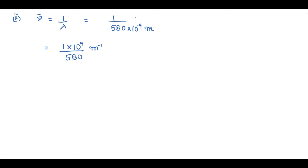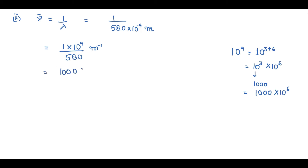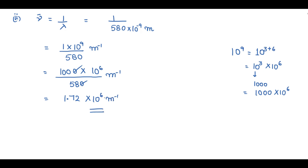Again the numerator value is less than 580, so we rewrite 10⁹ as 10³ × 10⁶, meaning 1000 × 10⁶. So we have 1000 × 10⁶ divided by 580 meter inverse. Cancelling: 100 divided by 58 gives 1.72, so the wave number is 1.72 × 10⁶ meter inverse. This is the wave number of yellow light emitted from a sodium lamp.